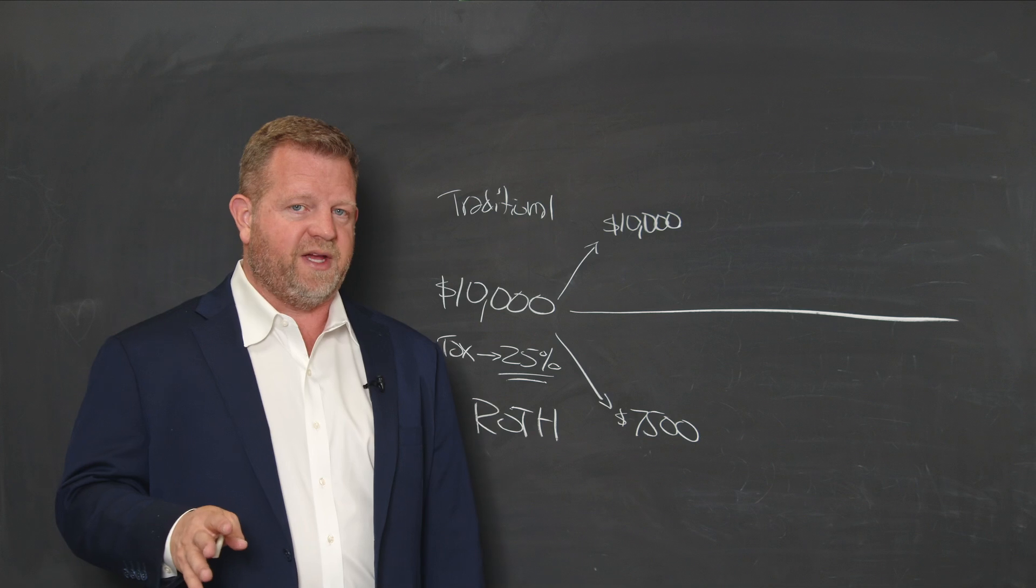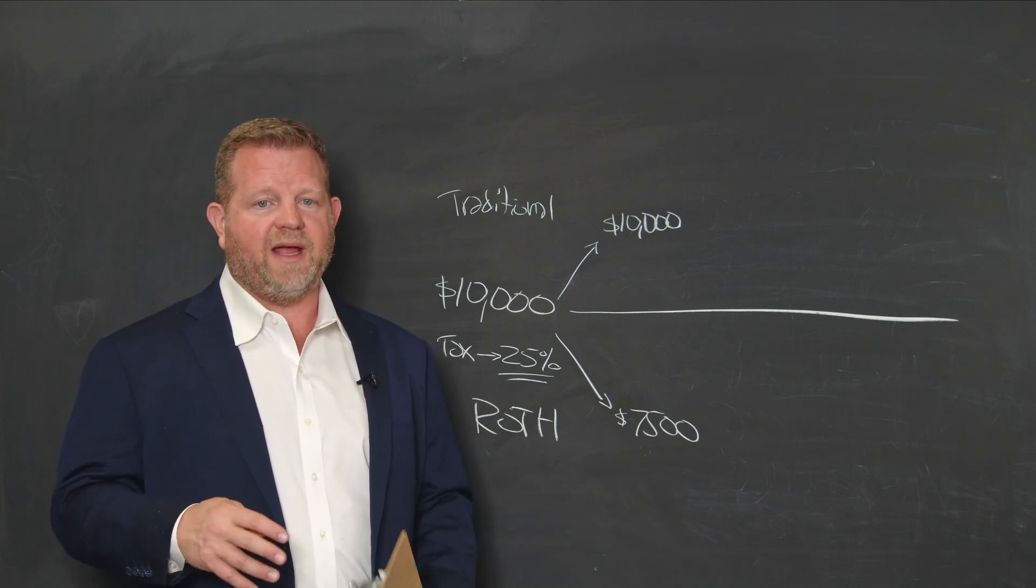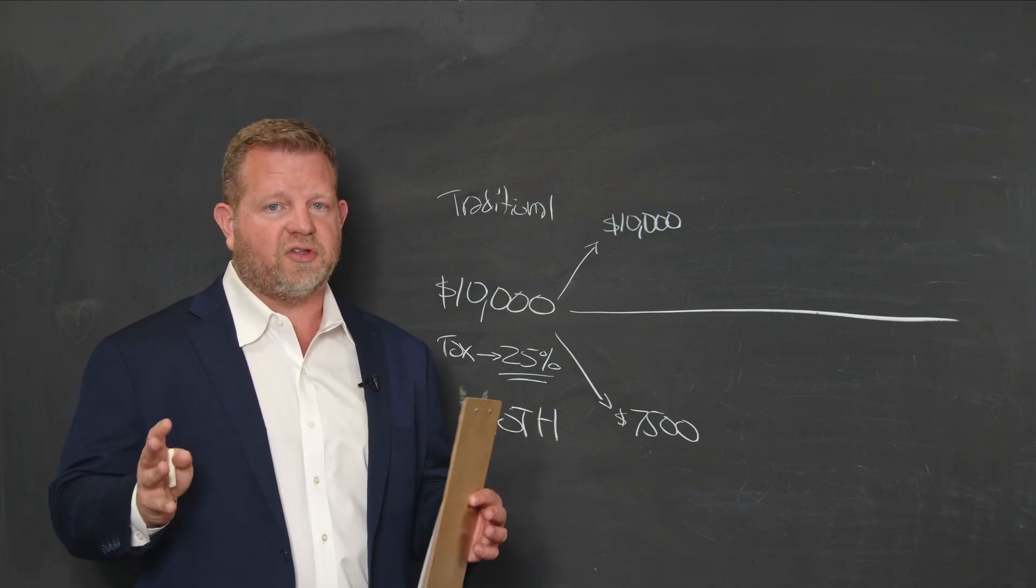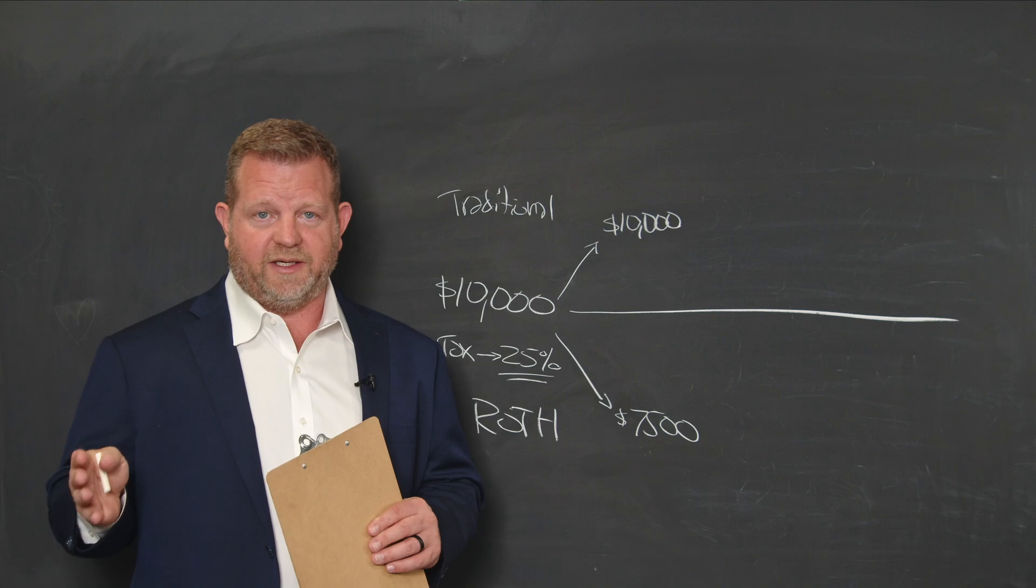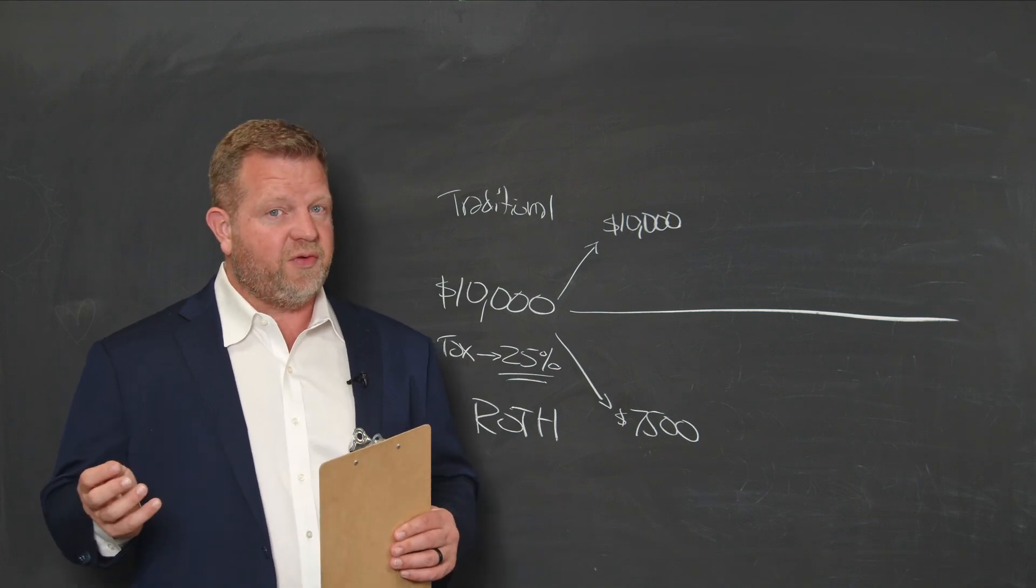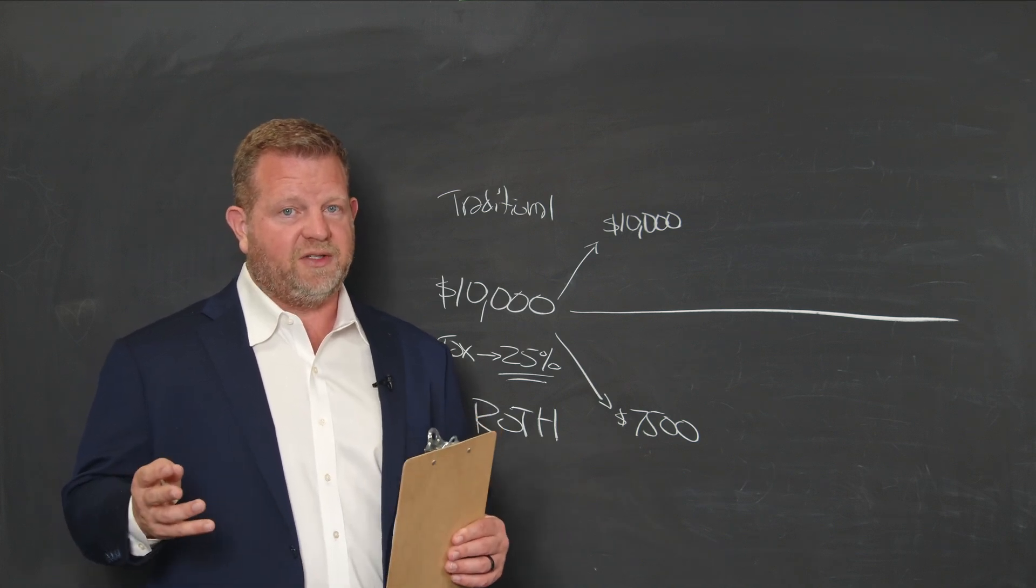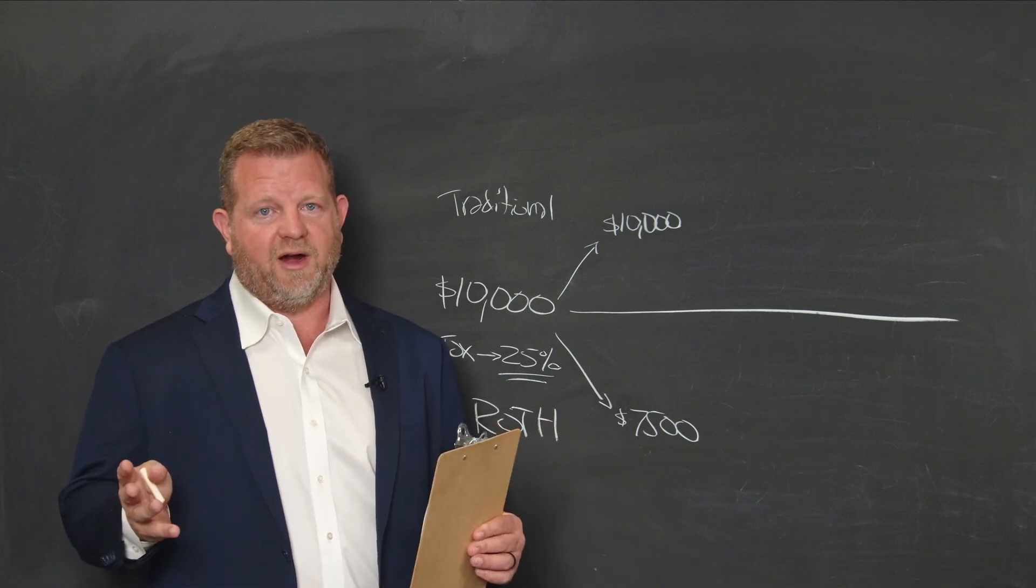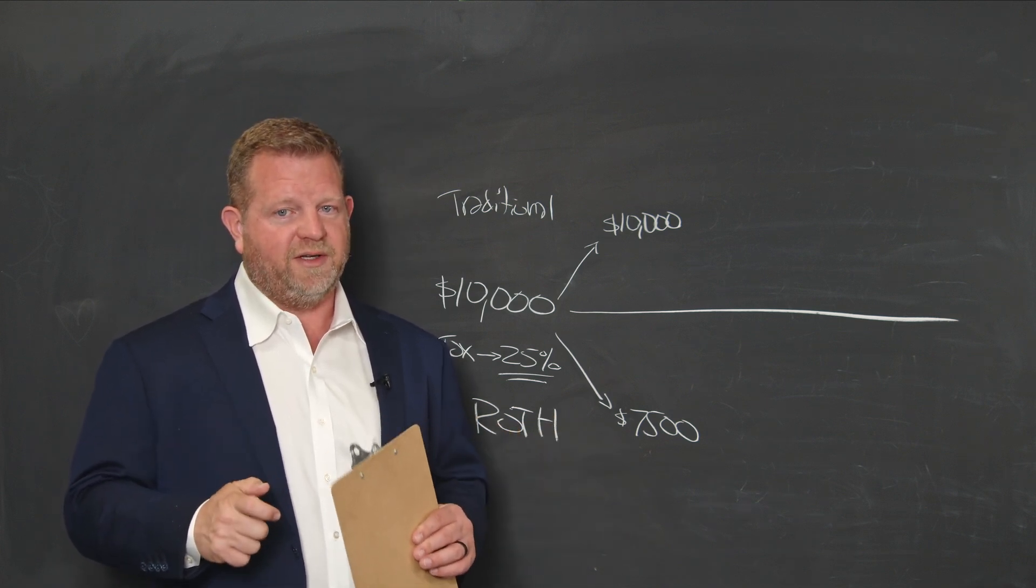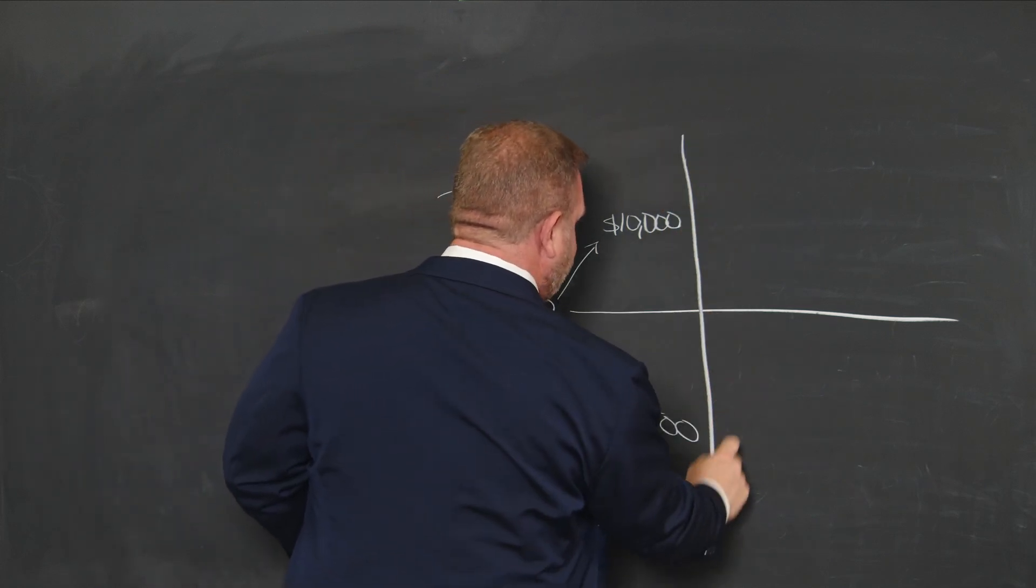If you use the rule of 72, which is for compounding, it means that an account will double. You take the interest rate that it's earning, divide it into 72, and that's how many years it will take to double. So the S&P has returned over 10%. So it's going to be about every seven years. So we take 72 divided by 10 point whatever it is. I'm just going to use for sake of argument, our money is going to double every seven years.